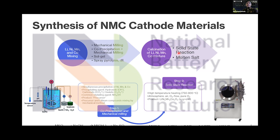The second step is calcination of the lithium, nickel, manganese, and cobalt mixture. From co-precipitation we obtain a precursor — a mixture of nickel, manganese, and cobalt — which is then mixed with lithium and heated at high temperature. There are two methods: solid-state reaction, where we simply heat the mixture, and molten salt, where salt is used as the reaction medium. For later discussion we'll focus on solid-state reaction, as it is the most common method.